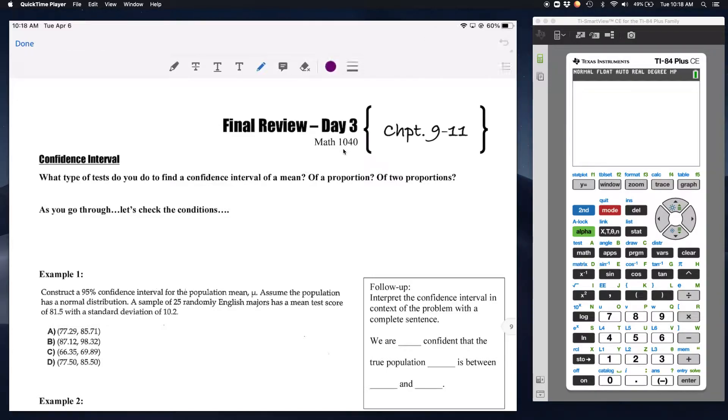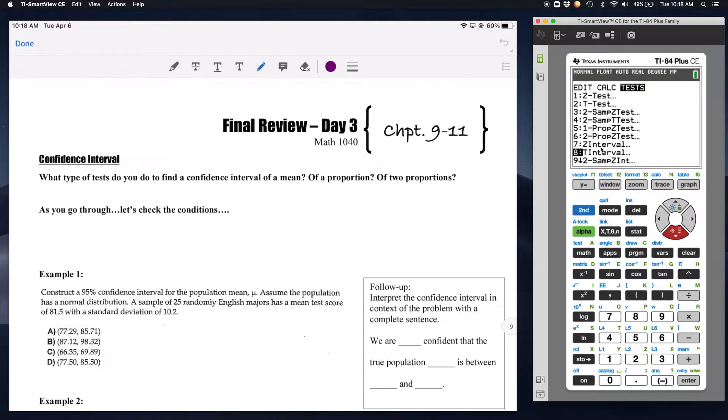Okay, so what type of test do you do to find a confidence interval of a mean or of a proportion, or two proportions? Remember we go stat, we go right to test, your intervals. For a mean, we always use the T interval, so we're going to use number 8. The nice thing is, in these chapters, anything dealing with a mean is a T, anything dealing with a proportion is going to be a Z. So for proportion, you've got A, which is your one prop Z interval, and then two proportions, you're going to go down to B, which is two prop Z interval.